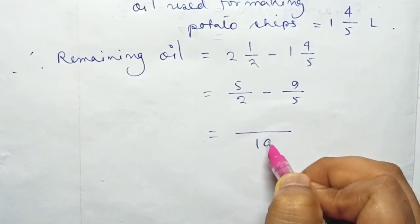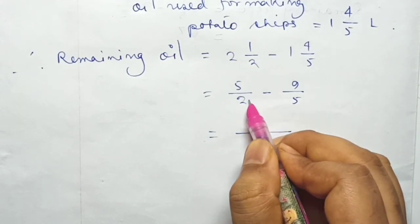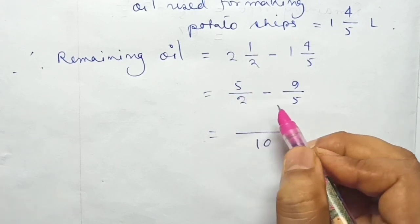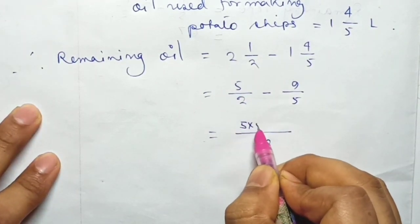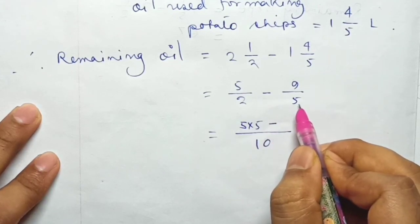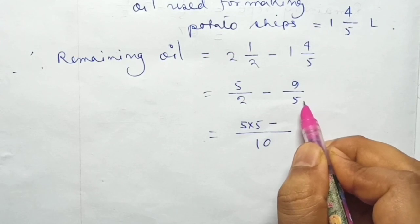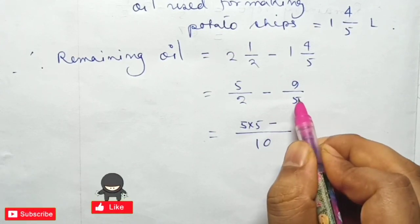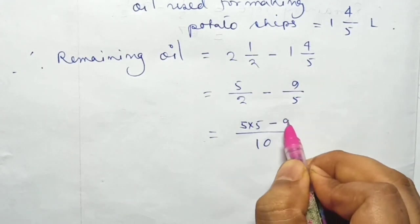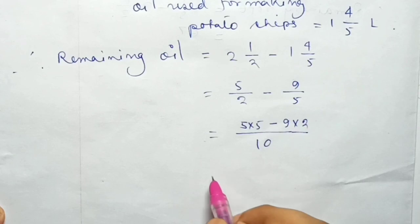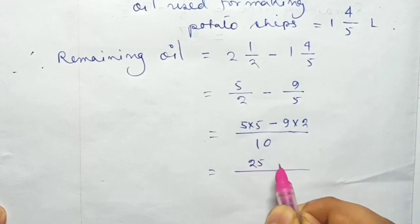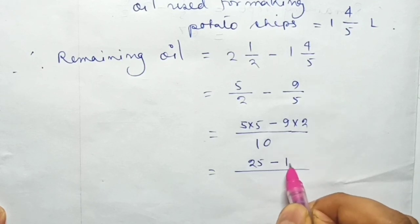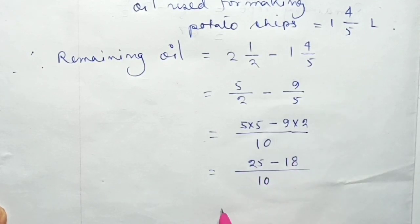Converting to denominator 10: 5/2 becomes (5×5)/10 = 25/10, and 9/5 becomes (9×2)/10 = 18/10. Subtracting: 25/10 - 18/10 = 7/10 liter is the remaining oil.